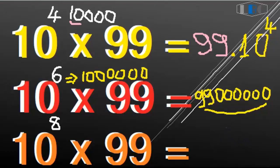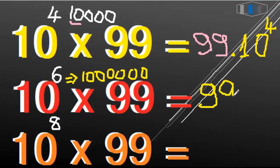And so now if you want to write the second shortcut way, you can write like this: 99.10 to the 6th. This is the right answer.